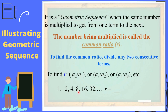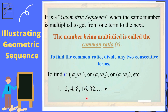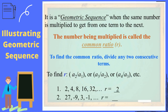And 8 divided by 4 is 2. 16 divided by 8 is 2 also. 32 divided by 16 is 2 also. So therefore, the common ratio is 2.